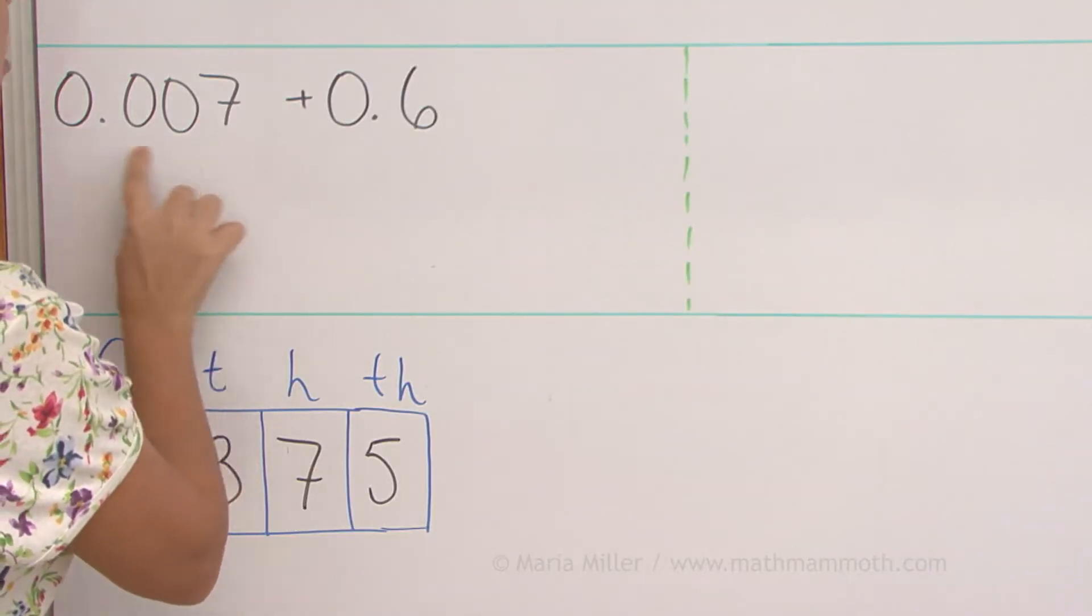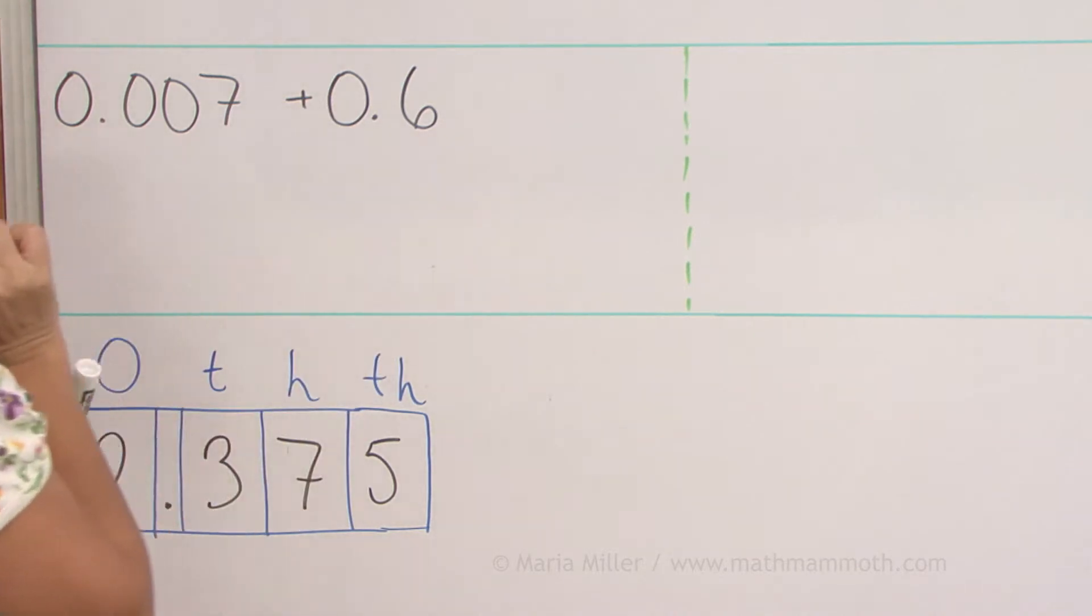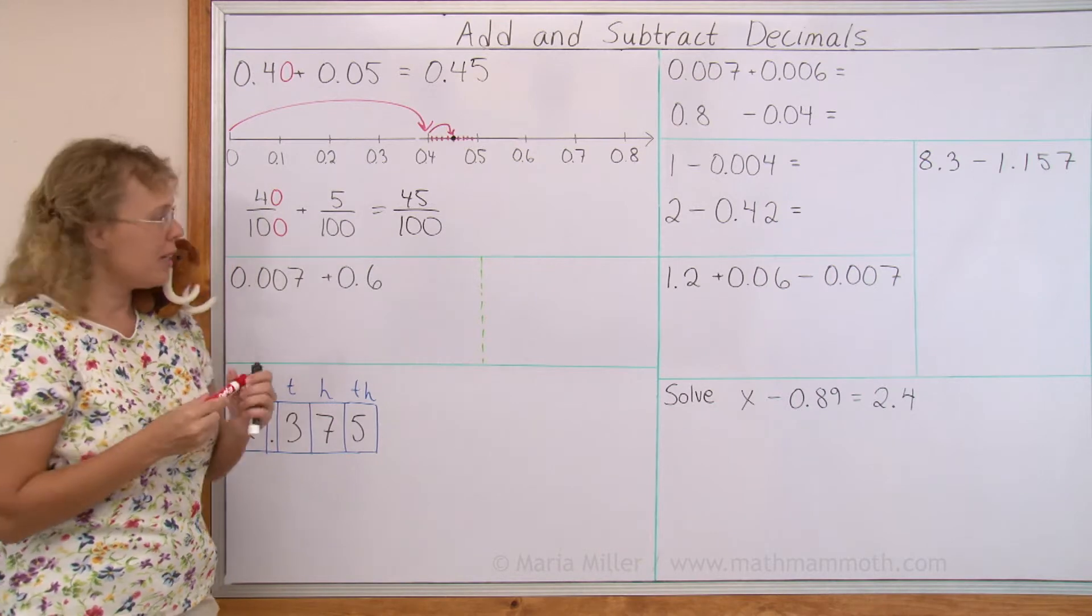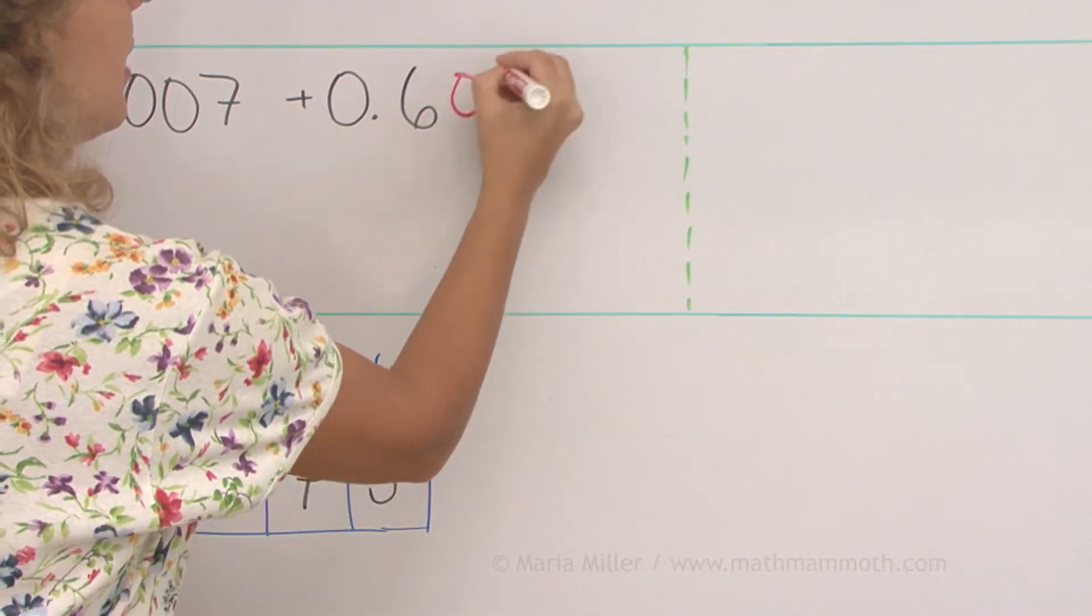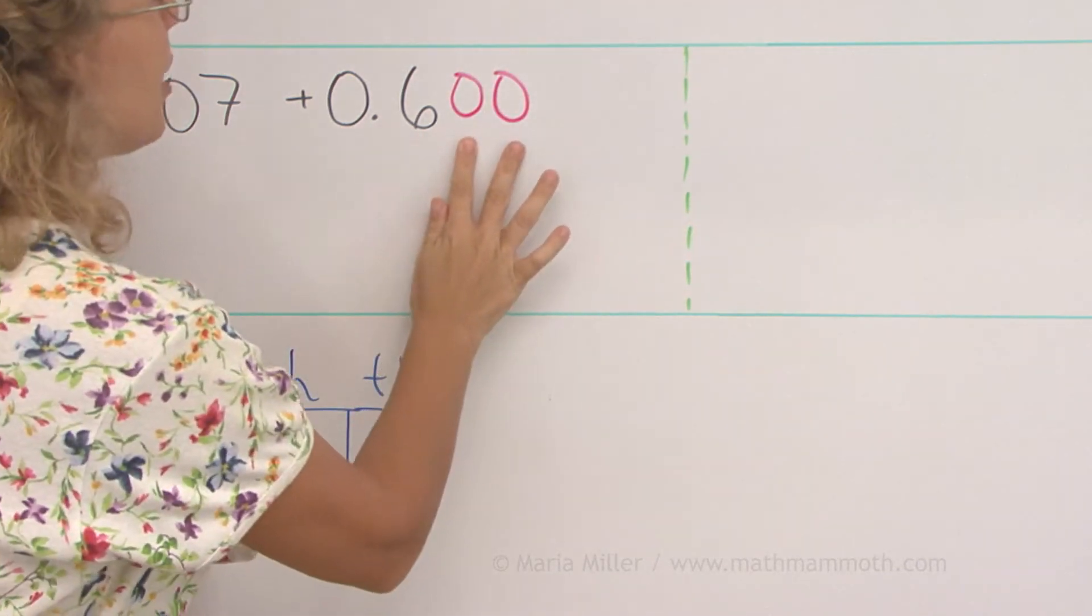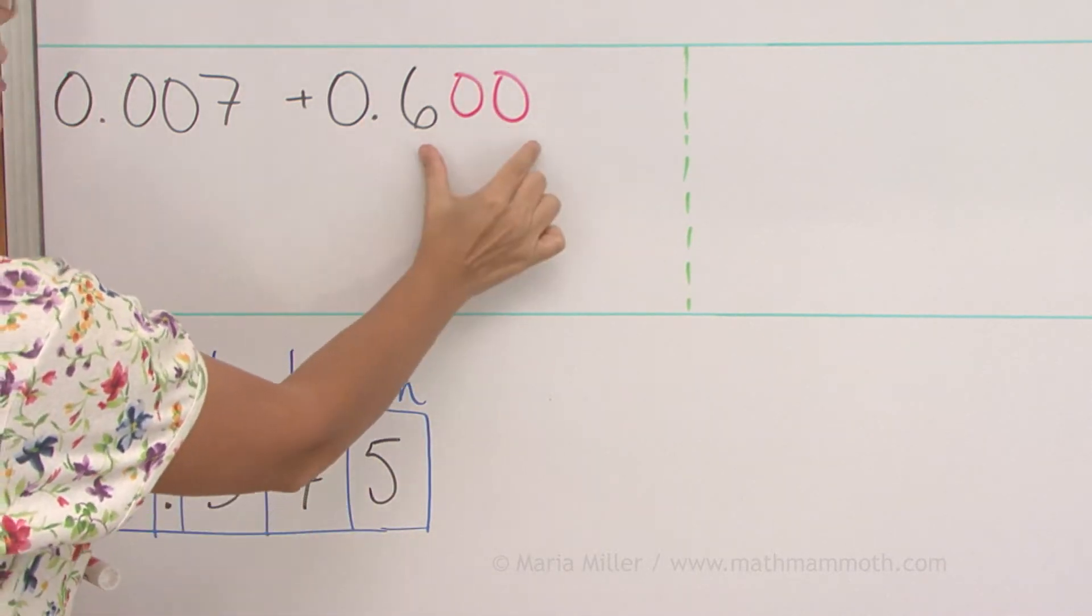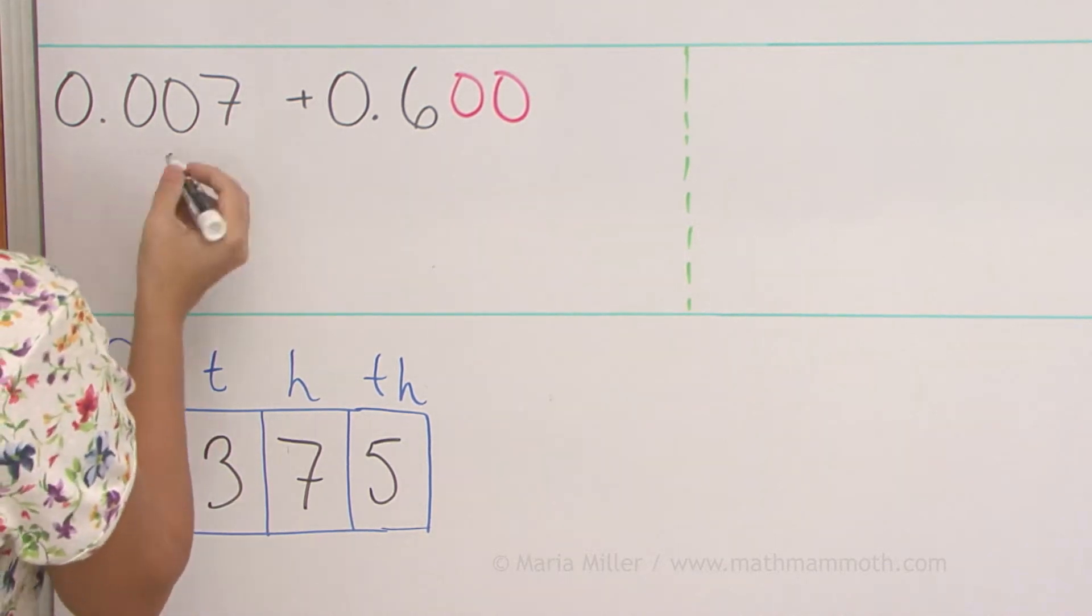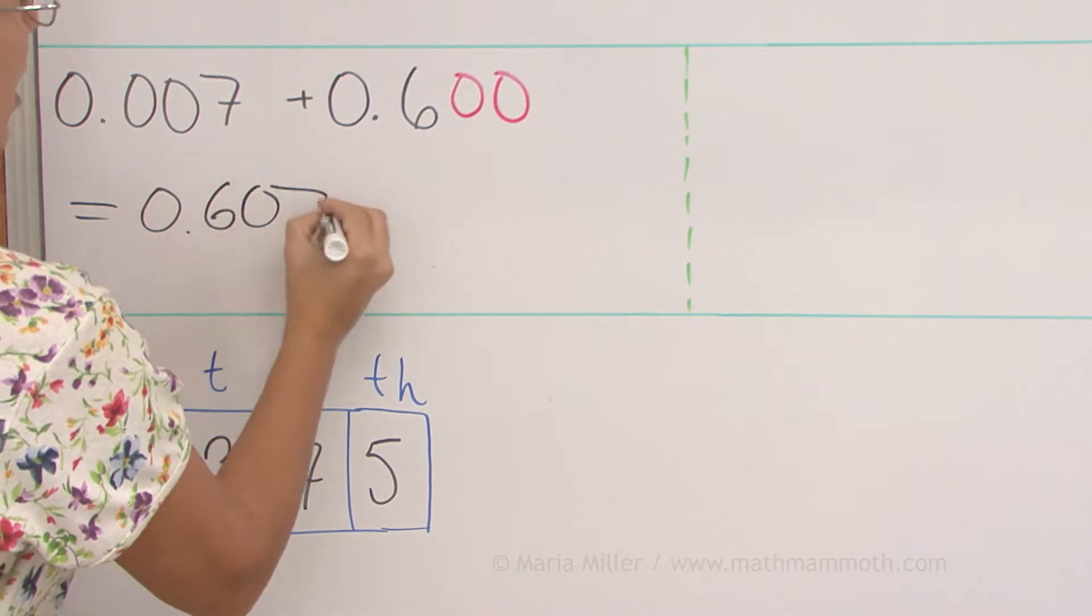We have 7 thousandths and 6 tenths. We can add easily if we make both of them to be thousandths parts. And I can do that by thinking of this as 600 thousandths. Tagging these two zeros does not change the value of this number. But now I have it as 600 thousandths and 7 thousandths. So the answer is 607 thousandths.